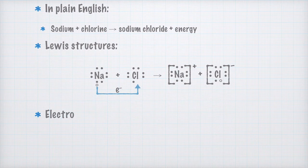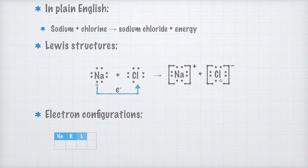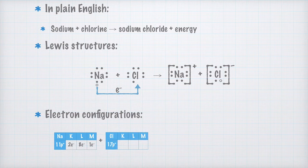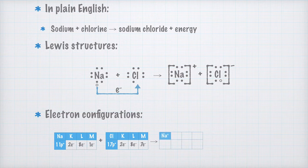Let's also write this with electron configurations. The sodium atom has 11 protons, with 2 electrons in the K-shell, 8 in the L-shell, and 1 in the M-shell. It reacts with a chlorine atom that has 17 protons in the nucleus, and therefore 2 electrons in the K-shell, 8 electrons in the L-shell, and 7 electrons in the M-shell. In the reaction, a sodium ion is formed — still with 11 protons — but now a total of 10 electrons: 2 in the K-shell and 8 in the L-shell.